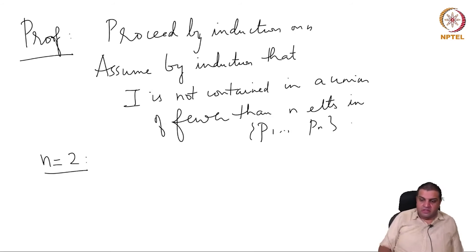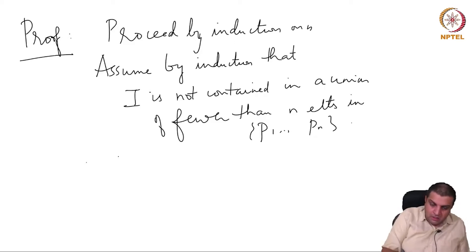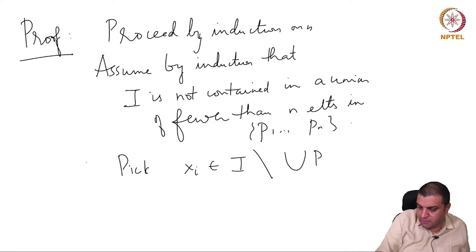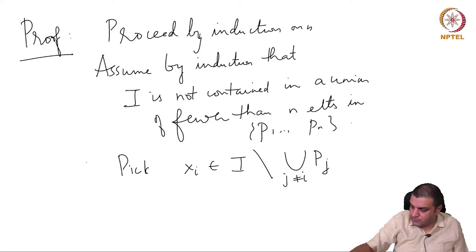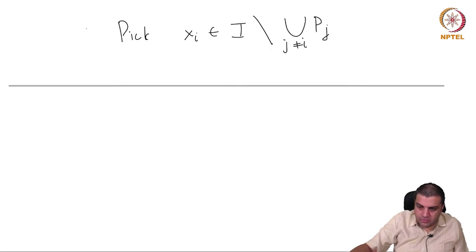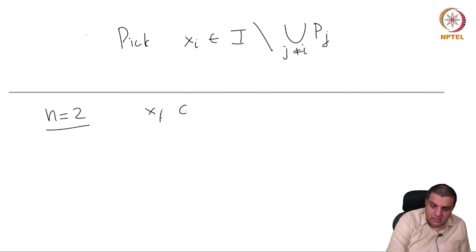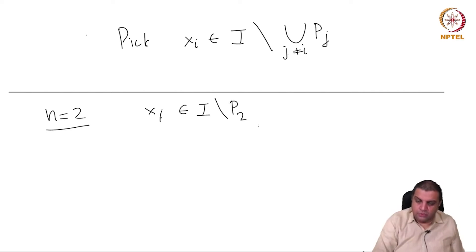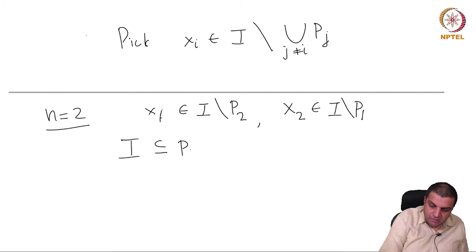Since I is not contained in the union of n−1 things, pick xᵢ in I but not in the union of Pⱼ for j ≠ i. So x₁ is inside I but not in P₂, and x₂ is inside I but not in P₁. And I is contained inside P₁ ∪ P₂.